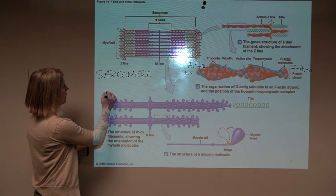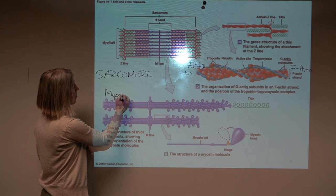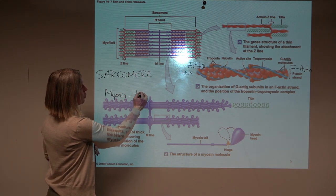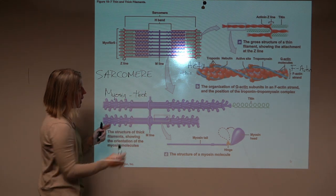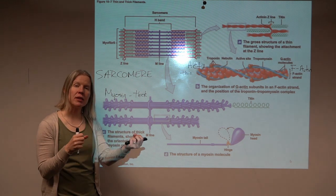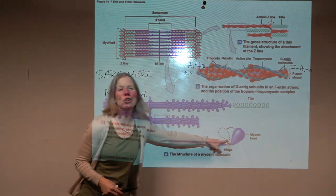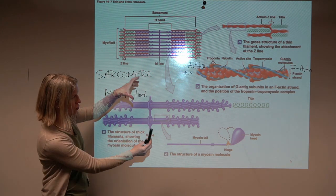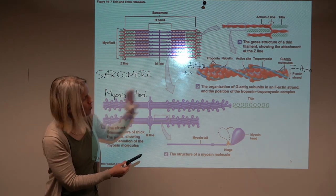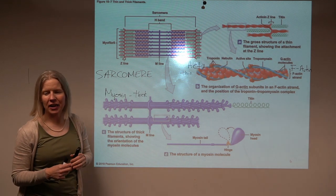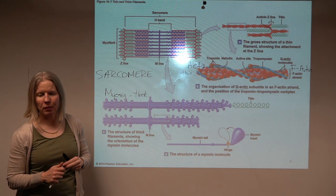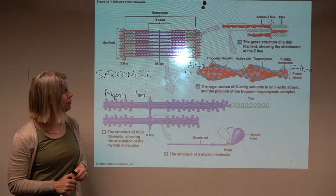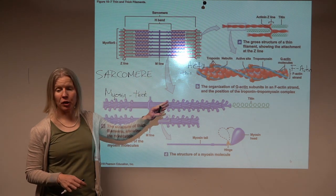Your thick filament is called myosin. And myosin ends up being this bundle of proteins that kind of look like golf clubs. That's my best description. So just wrap a bunch of golf clubs together, and that's kind of what you're looking at here with myosin. Okay, so thick filament and thin filament.